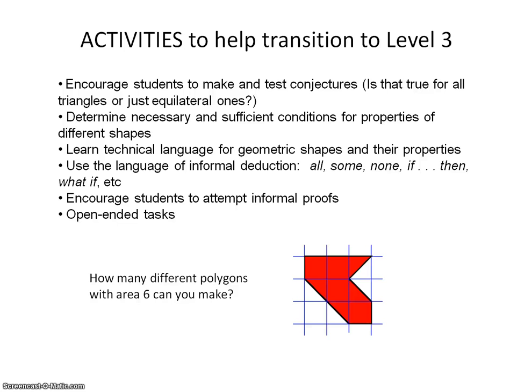Activities to help students transition from level 2 to level 3: encourage students to make and test conjectures — is that true for all triangles or just equilateral ones? Help them determine the necessary and sufficient conditions for properties of different shapes. Why does a pentagon always have five sides? Does it have to be fat and puffy, or can it be dented in? Students can learn technical language for shapes and their properties and use the language of informal deduction: all circles have a radius; some triangles have a right angle; no circles have a right angle; if a square is five inches wide, then it's five inches tall. Encourage students to attempt informal proofs, and engage in open-ended tasks such as: how many different polygons can you make on a geoboard with area 6? They can record answers on geoboard paper or graph paper.